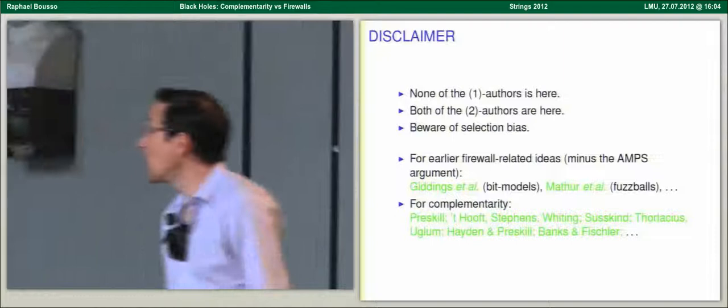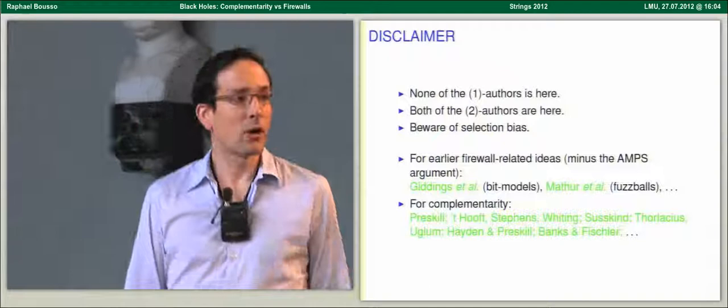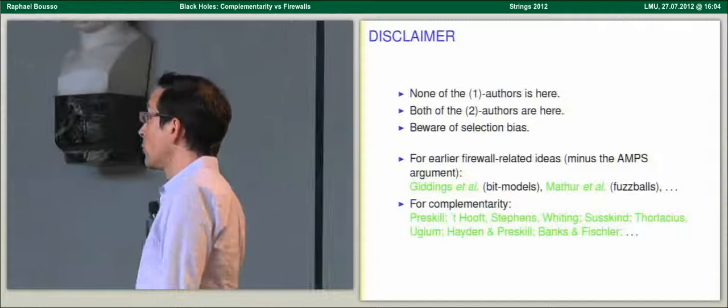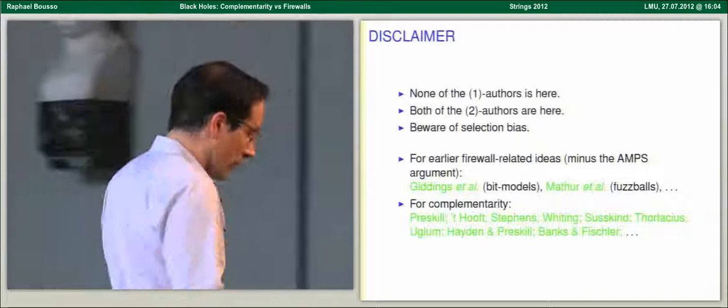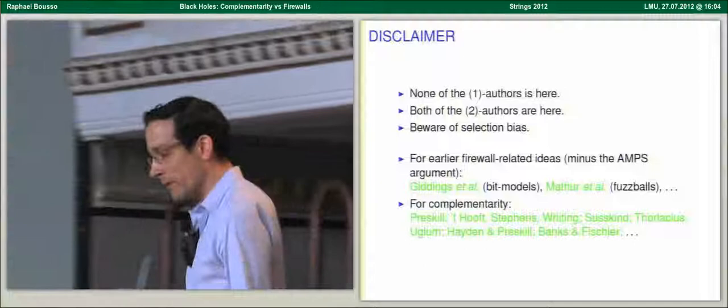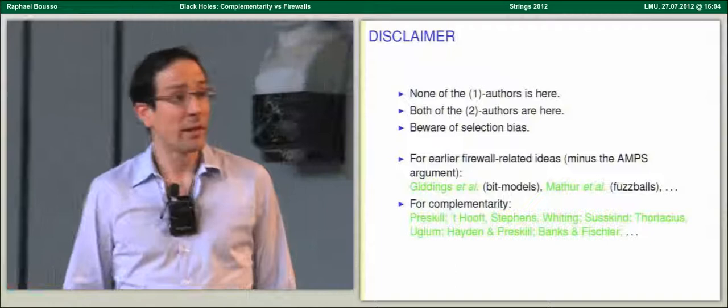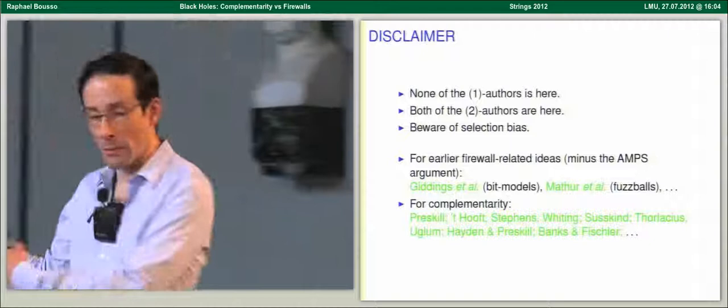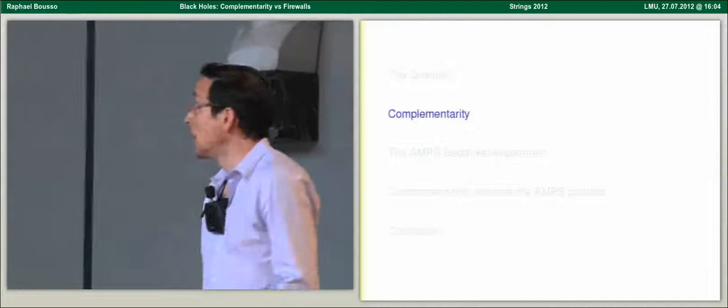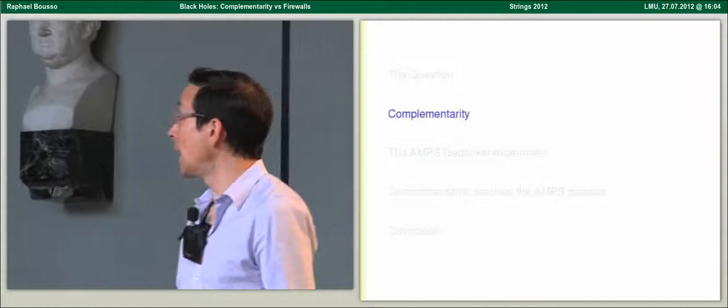I should also say I'm not going to give a complete or fair overview of all related literature. I want to alert you to bit models investigated by Giddings and others, and to fuzzballs — all of these ideas have had some interplay with notions that you might experience something dramatic at the horizon. Complementarity has a long history; I particularly want to alert you to Banks and Fischler, who had a sequence of papers trying to implement this into a full quantum gravity theory in cosmology.